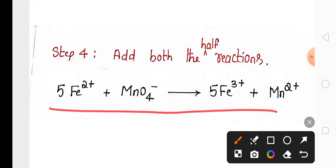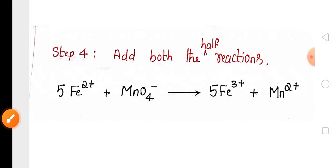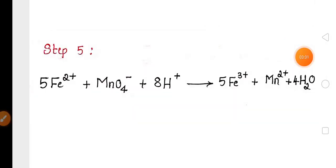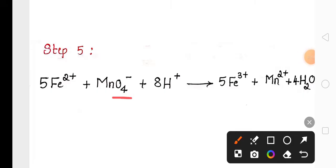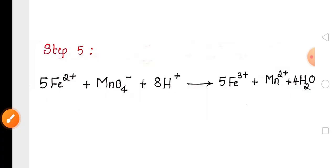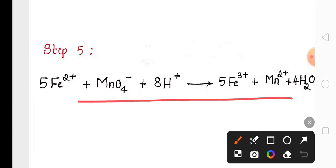Finally, we need to balance the oxygen present on the reactant side by putting water on the product side. There are four oxygen atoms on the reactant side, so we add four water molecules on the product side. To balance the eight hydrogen atoms, we add eight H⁺ ions on the reactant side. This gives us the balanced redox reaction according to oxidation number.